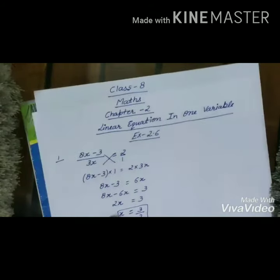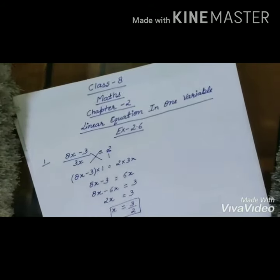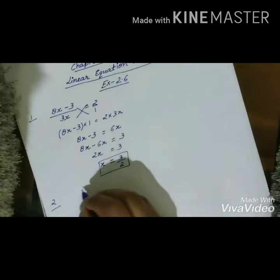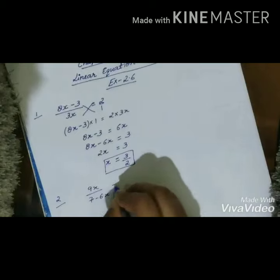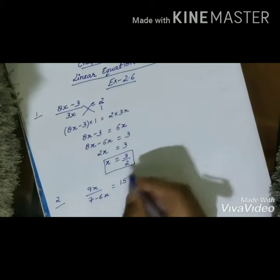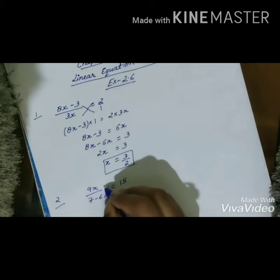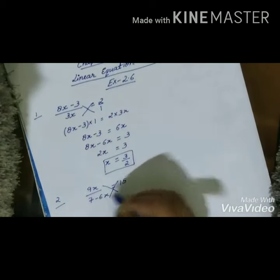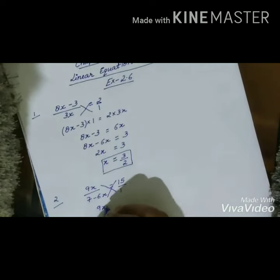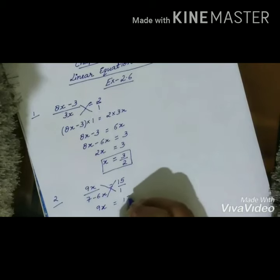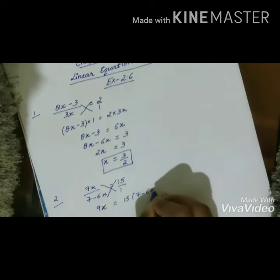Now let's continue to the second question: 9x / (7 - 6x) = 15. For solving this question, we again use the cross multiplication method. After cross multiplication, we will get 9x × 1 = 9x, and 15 multiplied by (7 - 6x).